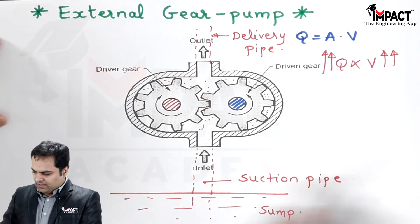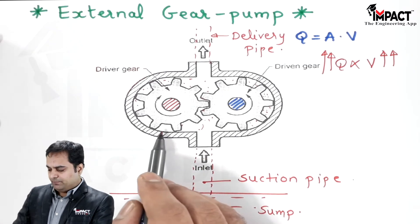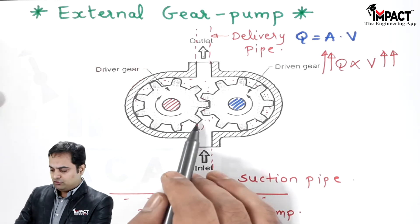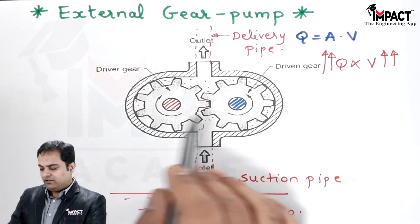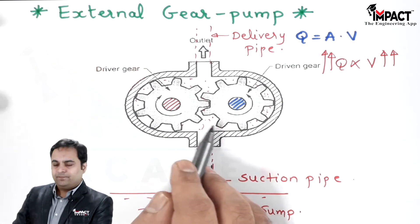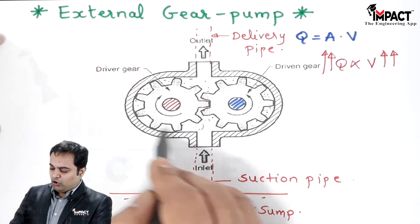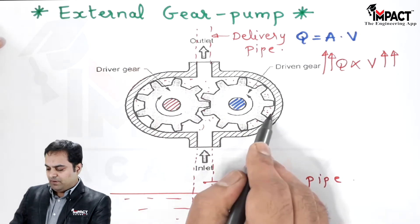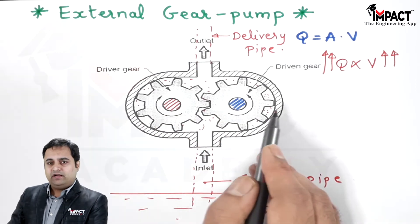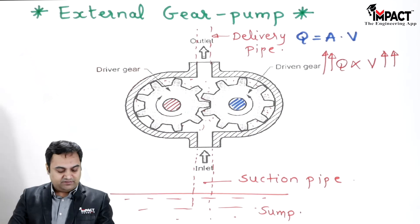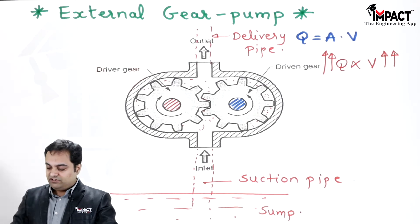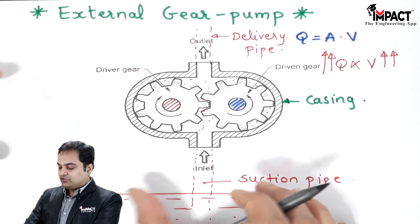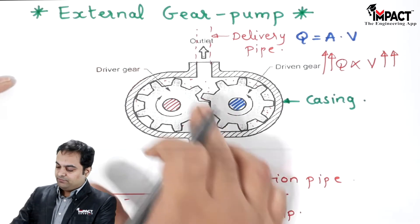The pump delivers high-pressure oil which can be used, for example, for lubrication purposes in IC engines. Oil is a viscous liquid, which is why we use a gear pump here. One advantage is that the same oil serves as lubrication for the gear pump itself, so no external lubrication is needed.